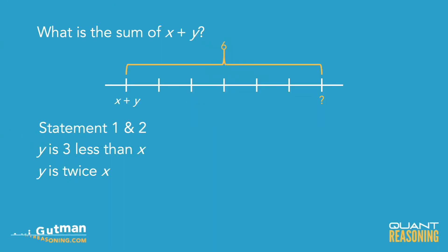So when we combine the statements, we know two things. We know the difference between x and y, and we also know their ratio.